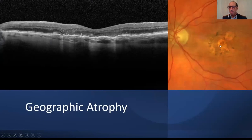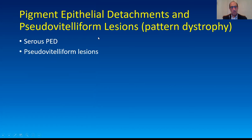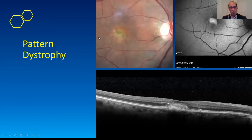Here's another patient with small areas of geographic atrophy — you see the light going through and the loss of normal architecture, with the outer retina starting to come out. Pattern dystrophies are interesting because the deposits are in front of the RPE. Here you've got your RPE, a little irregularity, and then a pseudo-vitelliform lesion with hyperreflective material under the retina.